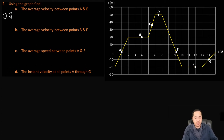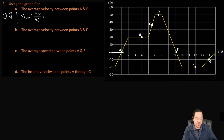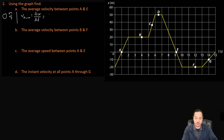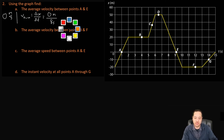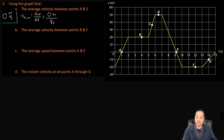Why is it zero? Our average velocity equals displacement over time. The displacement is zero — you started at zero meters, went up, and came back down to zero meters. So zero displacement divided by any time interval — maybe 8 seconds — still gives an average velocity of zero meters per second.